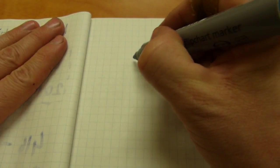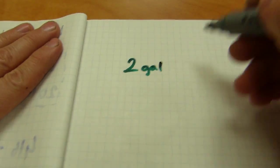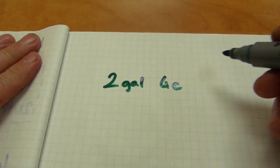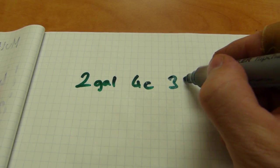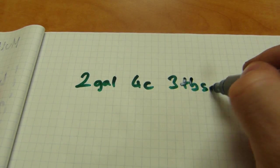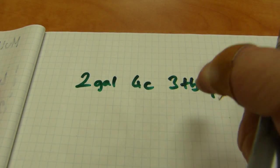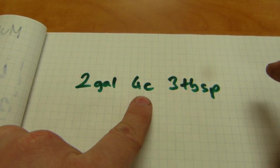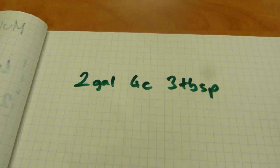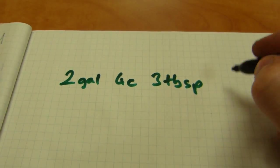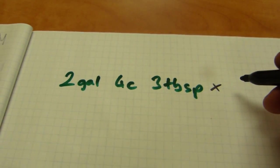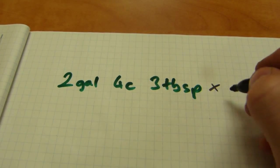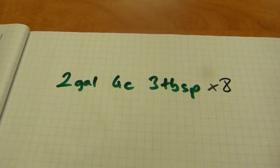If you have something like two gallons, four cups and three tablespoons. Sixteen of these make one cup and sixteen cups make a gallon. So there will be carry over just one more layer of carrying over. How about multiply this by, I don't know, how about eight times.